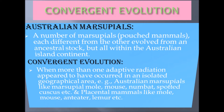Convergent evolution: when more than one adaptive radiation appears to have occurred in an isolated geographical area. Examples include Australian marsupials like marsupial mole, marsupial mouse, numbat, spotted cuscus, etc., and their placental mammal counterparts like mole, mouse, anteater, lemur, etc.